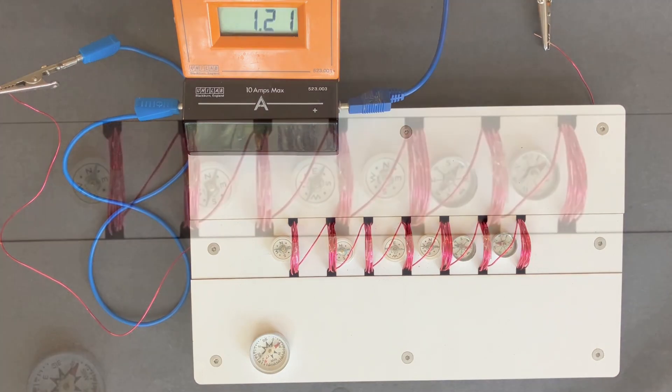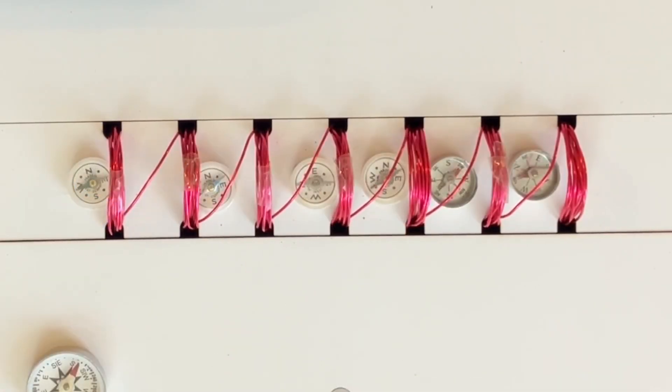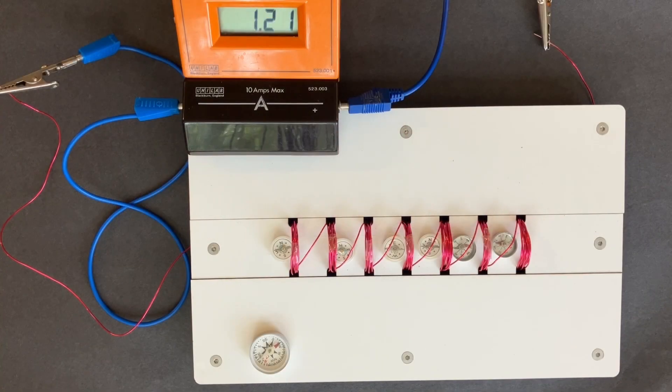Let's look at that a little bit more closely zoomed in. We can see the compasses align with the magnetic field line through the centre. Watch what happens as we increase the current.